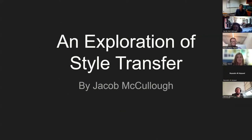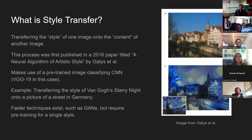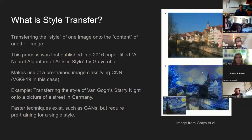My project was an exploration of style transfer. I wasn't really pushing any boundaries — I was just generating thousands of images and trying to find cool and novel styles. Style transfer is the idea of transferring the style of one image onto the content of another. It was first published in the paper 'Neural Algorithm of Artistic Style' by Gatys et al. in 2016. This example on the right is straight from that paper: a street in Germany with Van Gogh's Starry Night style transferred onto it.